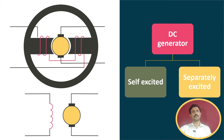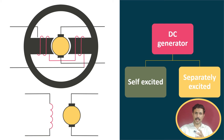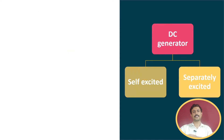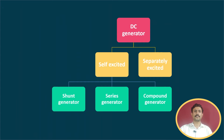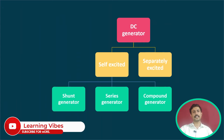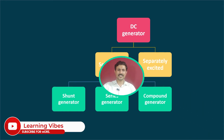Now let's talk about the self-excited DC generator. This self-excited DC generator is further classified into three categories: shunt generator, series generator, and compound generator. We will see the shunt generator first.